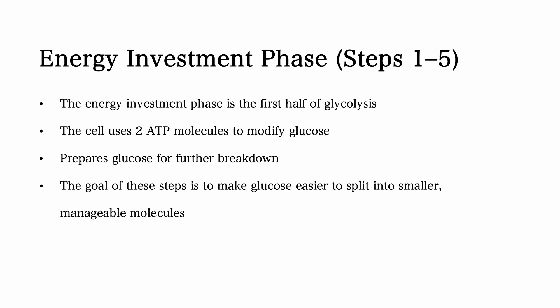Let's start with the energy investment phase. The energy investment phase is the first half of glycolysis, where the cell uses two ATP molecules to modify glucose. This phase prepares glucose for further breakdown, ensuring that it becomes more reactive and can eventually produce high energy intermediates. The ultimate goal of these steps is to make glucose easier to split into smaller manageable molecules. Let's look at each step.